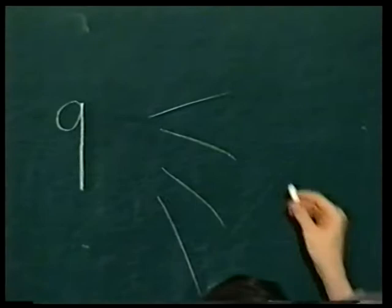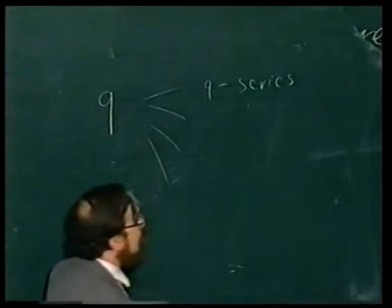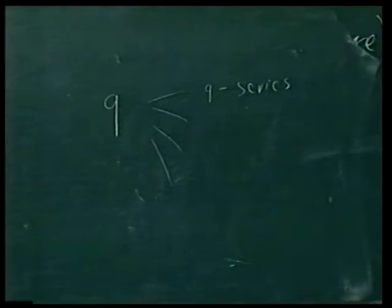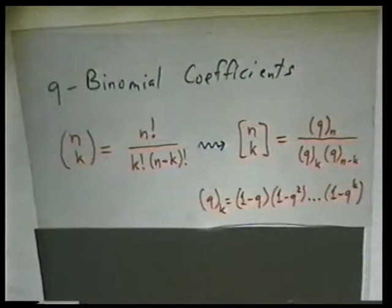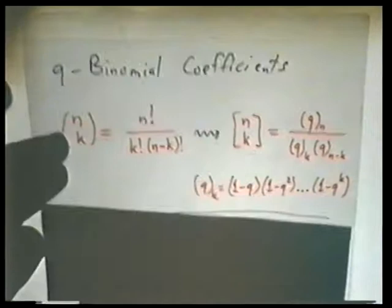On the one hand you have q-series, which comes from combinatorics. A typical example is the q-binomial coefficient. You start with the usual binomial coefficient n factorial over k factorial times n minus k factorial, and you replace n factorial by the symbol q-bracket-n, which is the product 1 minus q, 1 minus q squared, up to 1 minus q to the k.